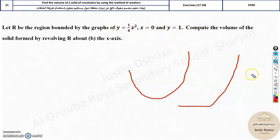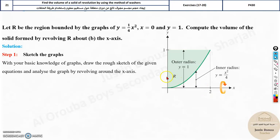x is equal to 0 and y is equal to 1. Okay, then compute the volume of the solid formed by revolving R above the x-axis. Now, let's understand the basic of this. This is a basic graph. Now, here,